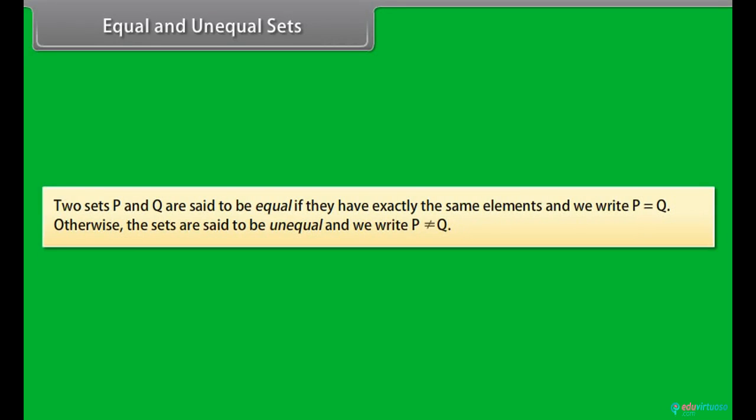Equal and unequal sets. Two sets P and Q are said to be equal if they have exactly the same elements, and we write P is equal to Q. Otherwise, the sets are said to be unequal and we write P is not equal to Q.